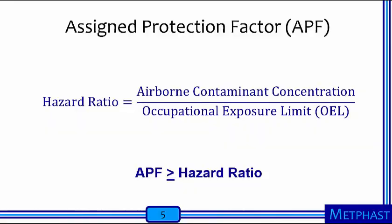An APF is determined by calculating the hazard ratio of the exposure. This is achieved by dividing the airborne contaminant concentration by the occupational exposure limit of the contaminant. The selected respirator should have an APF equal to or greater than the hazard ratio. Learners will use the hazard ratio formula to select suitable respirators for three exposure scenarios in this activity.